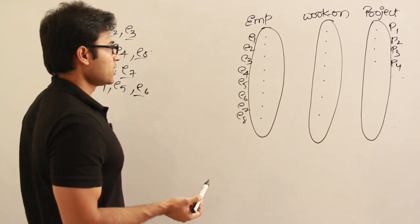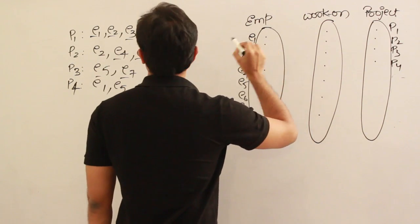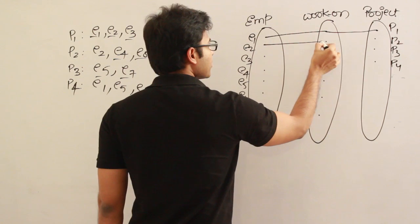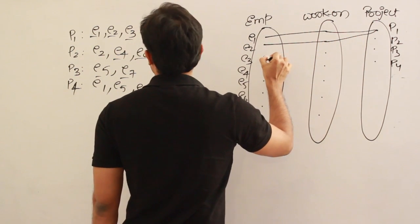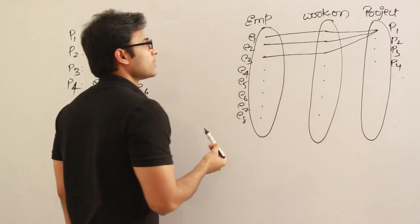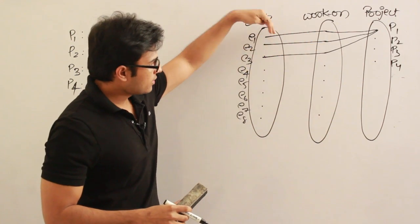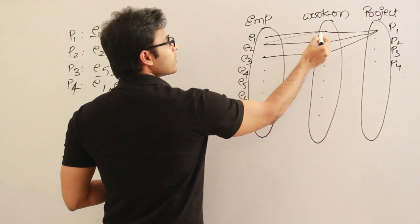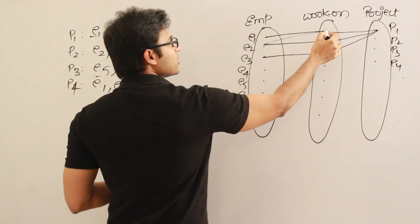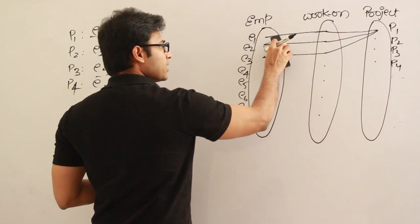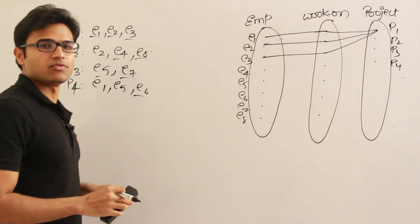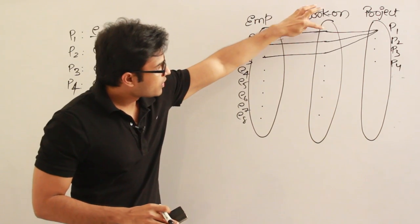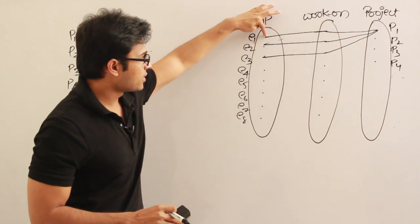Now let's see how this is modeled. P1 is related to E1, E2, and E3. Each relationship is formed by taking one entity from the employee set and one entity from the project set. You might think of drawing one line from three employees to one point, but actually each relationship is formed by taking one entity from here and one entity from there — you are not supposed to form a relationship by taking many entities from the same set and one entity from the other set. Every relationship entity is formed by taking one entity from each side.